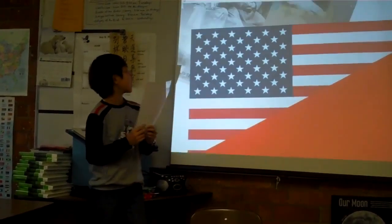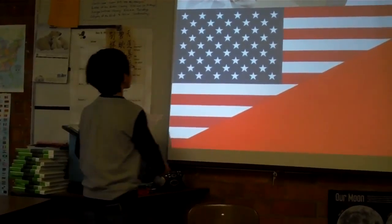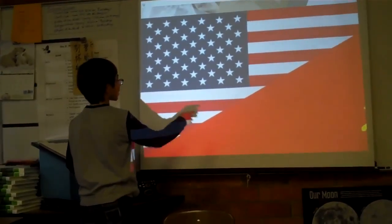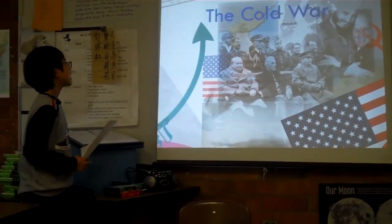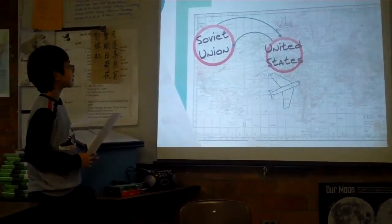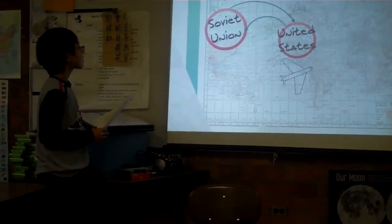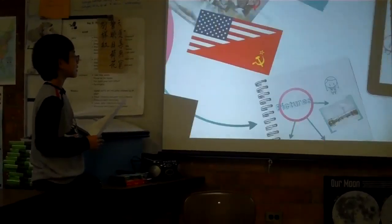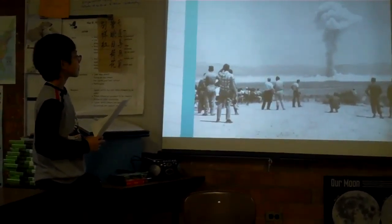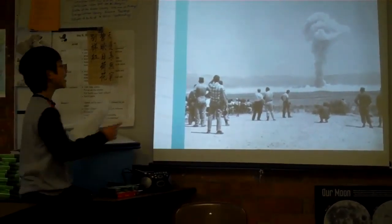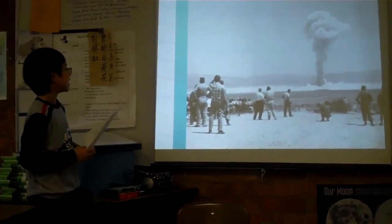Some pictures: this is the flag of the United States and the flag of the USSR. This is a picture of the map showing where the Soviet Union and the United States are. And here, I think the atomic bomb was — they're practicing dropping it.